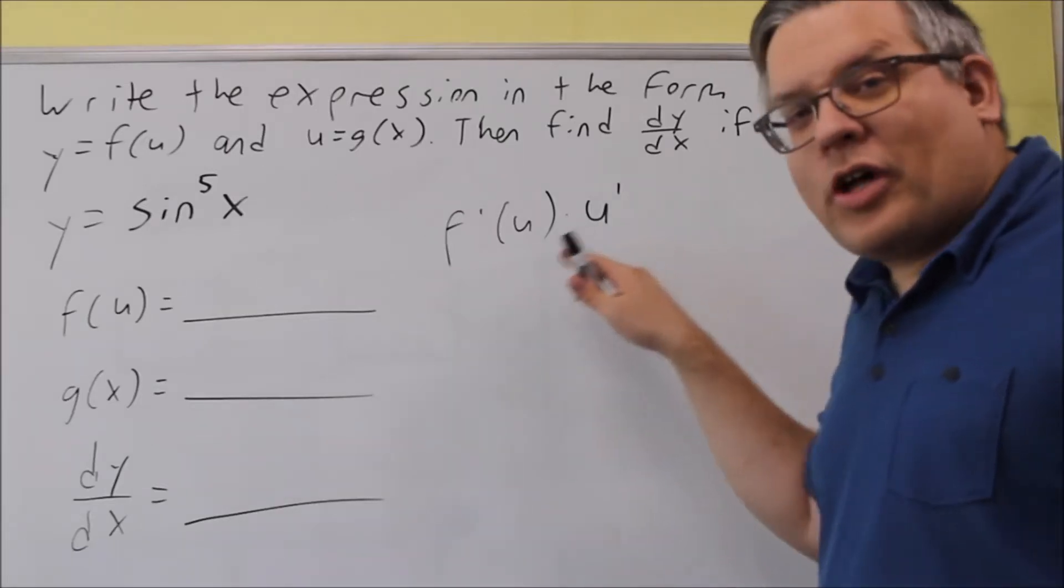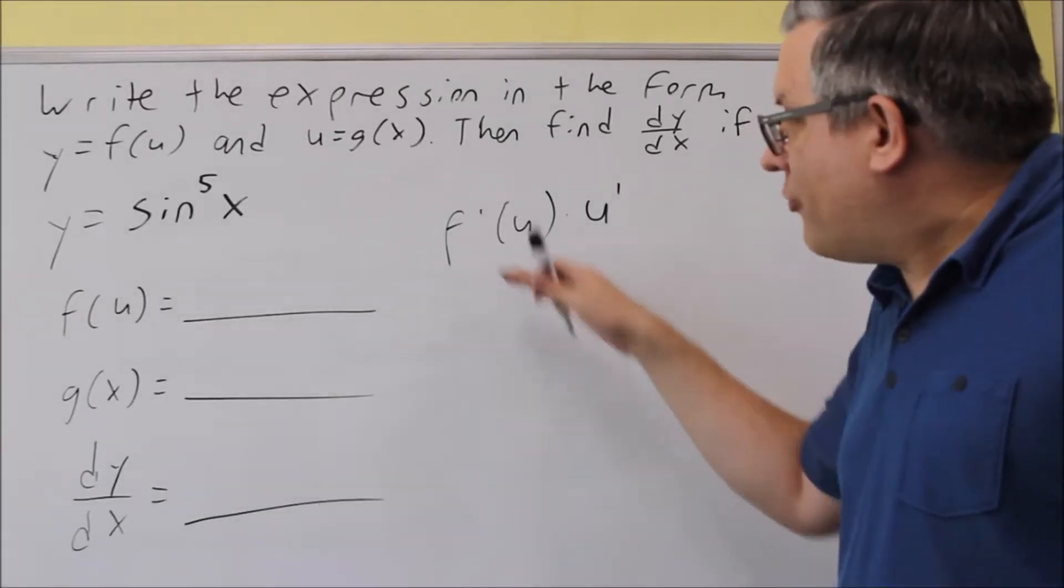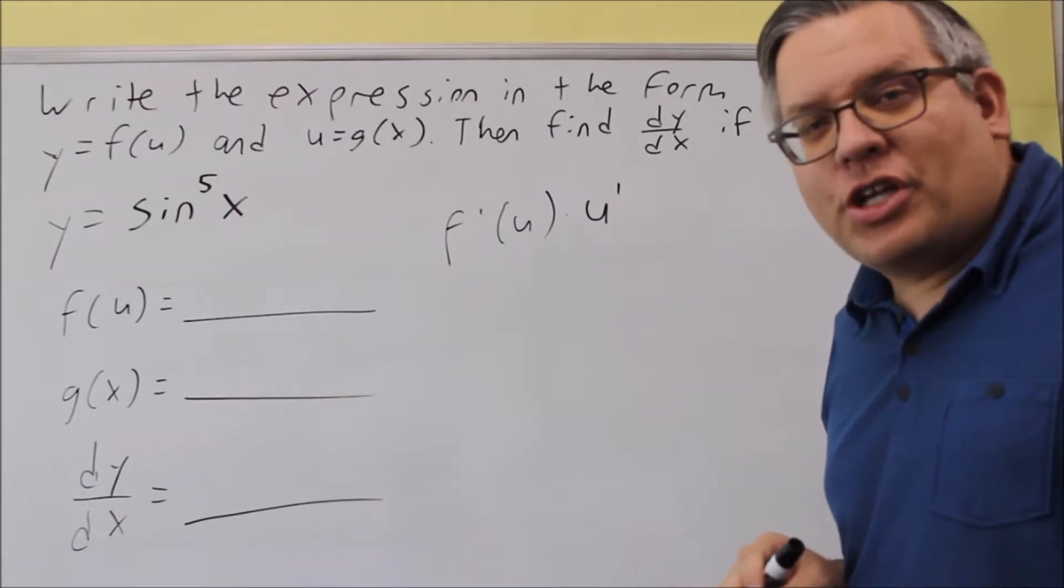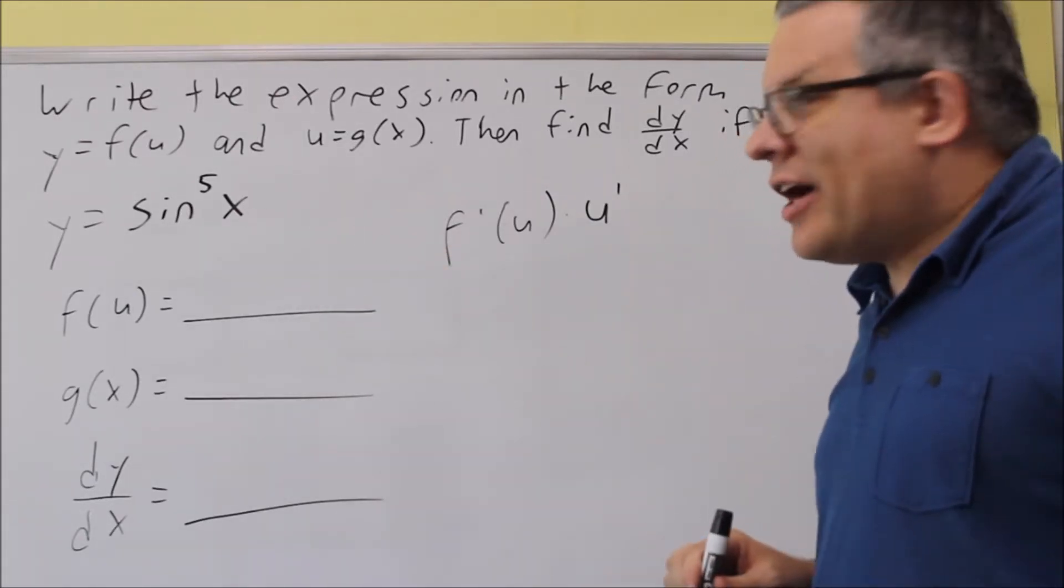Okay, this next problem, we want to apply the chain rule formula by first identifying the F and the G. Now we have sine to the fifth.